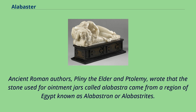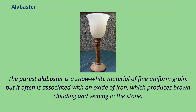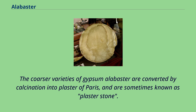The purest alabaster is a snow-white material of fine uniform grain, but it is often associated with an oxide of iron, which produces brown clouding and veining in the stone. The coarser varieties of gypsum alabaster are converted by calcination into plaster of Paris, and are sometimes known as plaster stone.